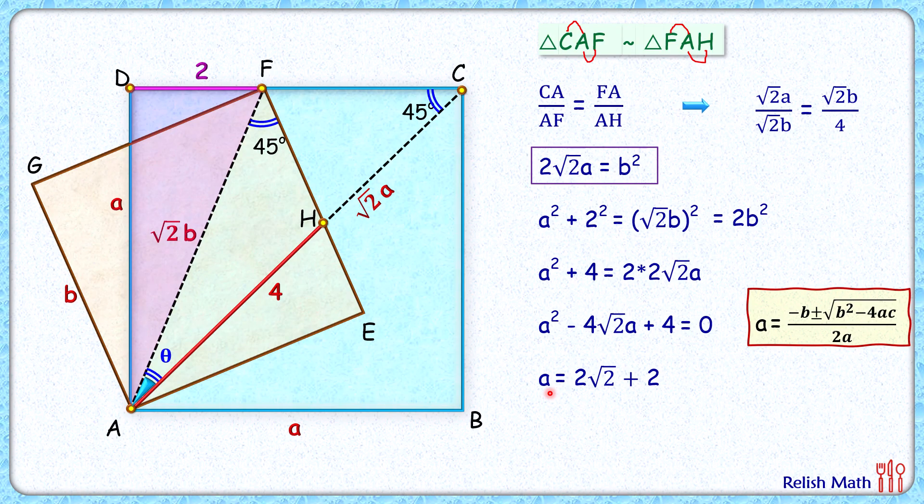And a squared will be the area of this blue square, and that a squared is 12 plus 8 root 2 centimeters squared, and that's our answer. I hope you enjoyed the solution. I will see you in the next video. Till then, tata, bye-bye.